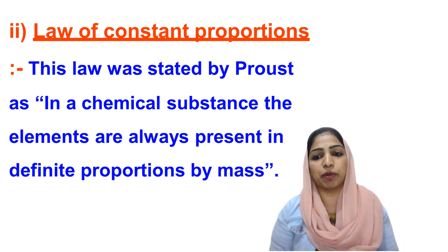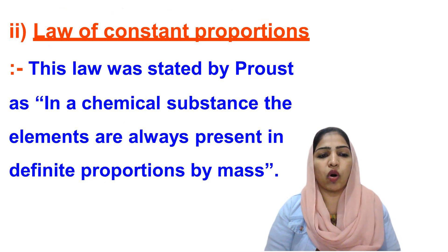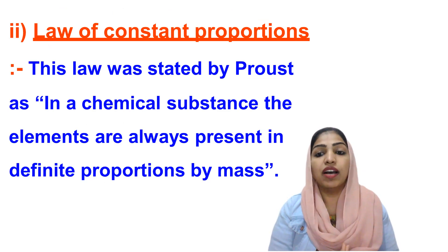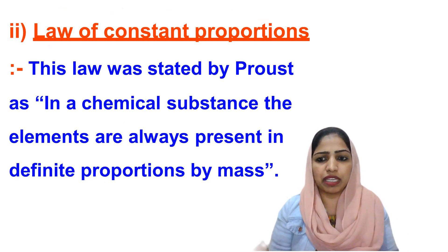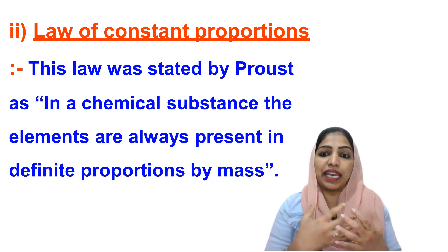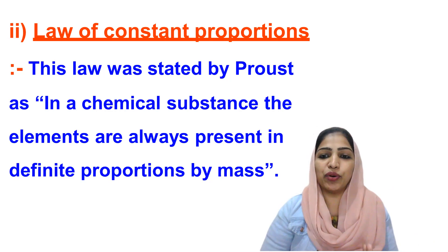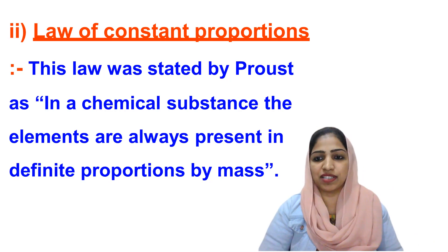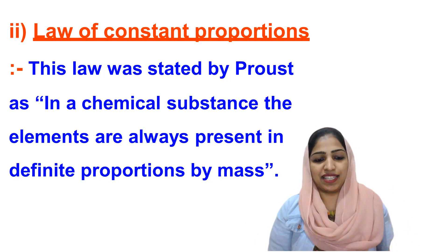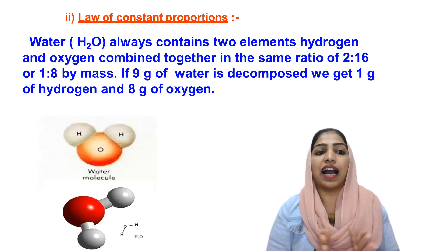The second law is the law of constant proportions. According to this law, in a pure chemical substance, the elements are always present in definite proportions by mass. For example, water is H₂O, formed by 2 hydrogen atoms and 1 oxygen atom.